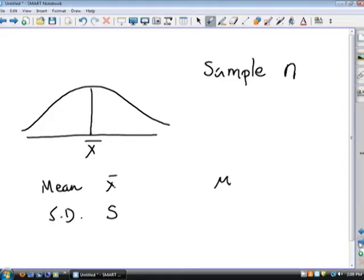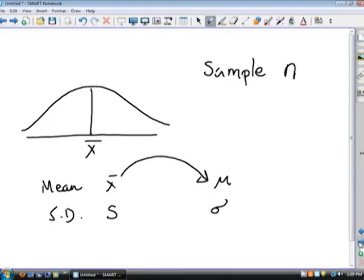Now these values might be different from the population mean μ and population standard deviation σ, but using the sample mean x̄, we can make an estimate of population mean μ.